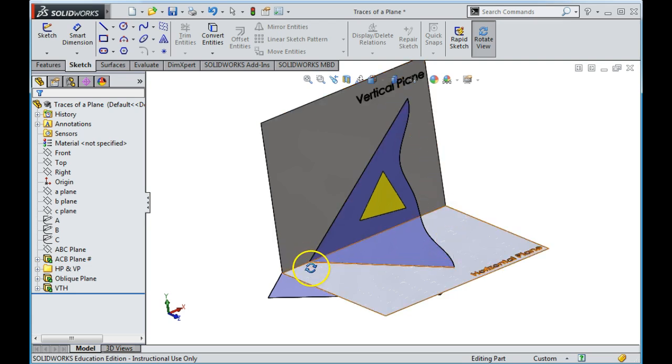The point where it cuts the XY line is going to be common to the vertical plane and the horizontal plane. So what I need to do here now is I need to find the VTH or the traces in my plane.